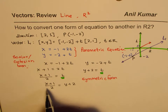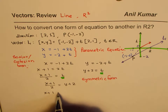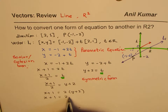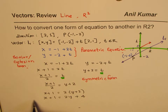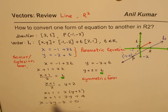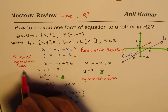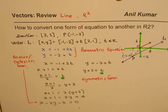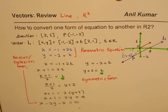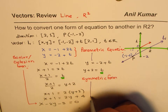From the symmetric form, we cross-multiply and simplify to get x plus 1 equals 2 times (y plus 2), so x plus 1 equals 2y plus 4. Bringing them all together and keeping the x coefficient positive: x minus 2y minus 3 equals 0. So that becomes the Cartesian form. As you can see, we can write the equation of a line in very different forms, and that is how we convert one form to the other.